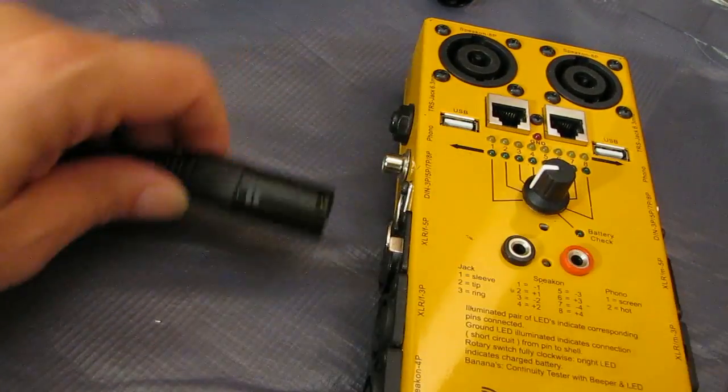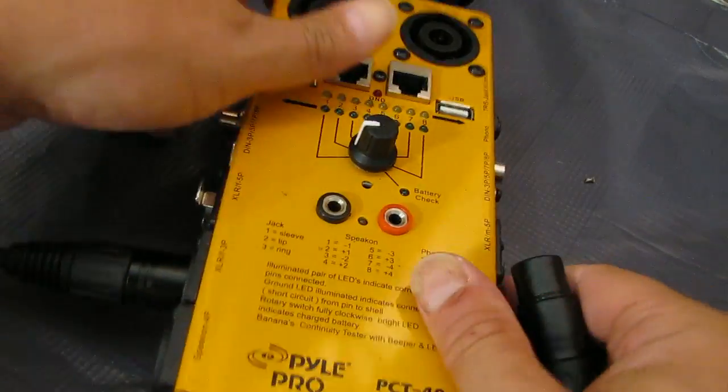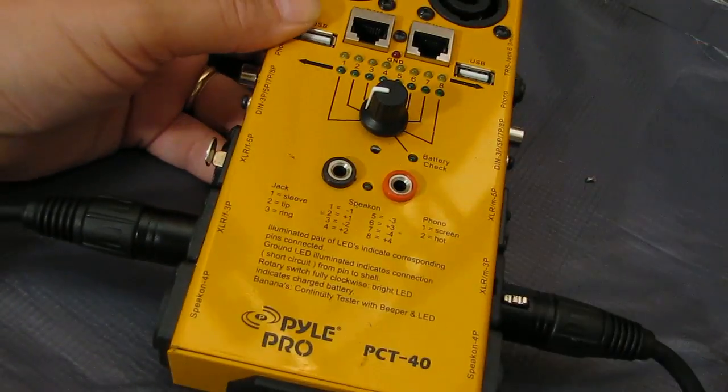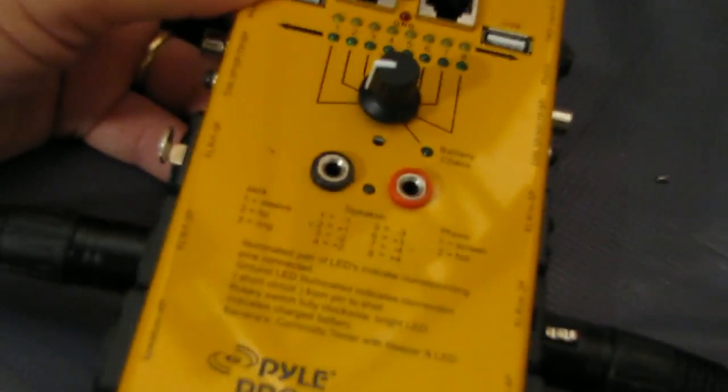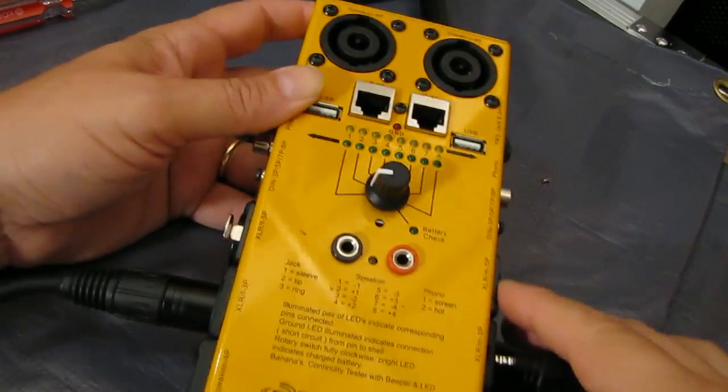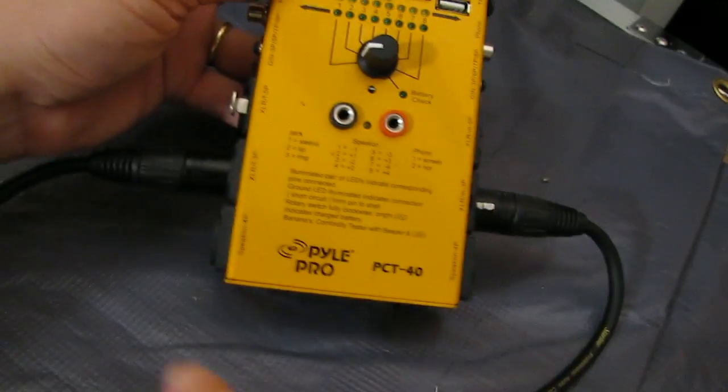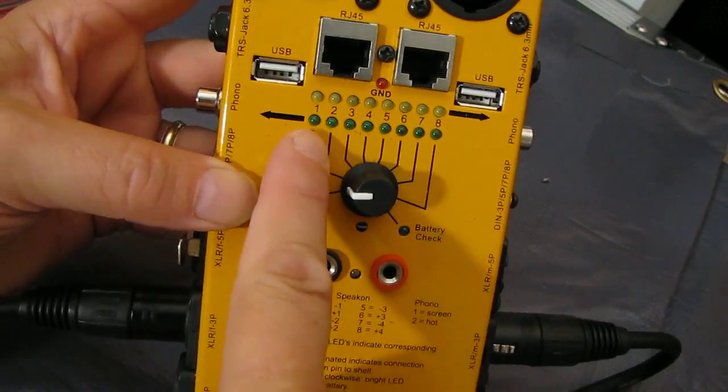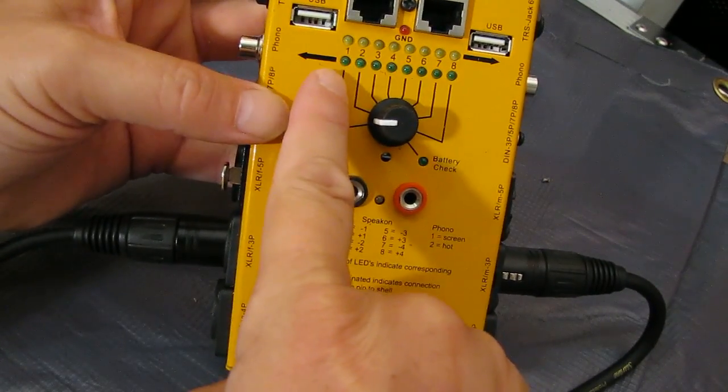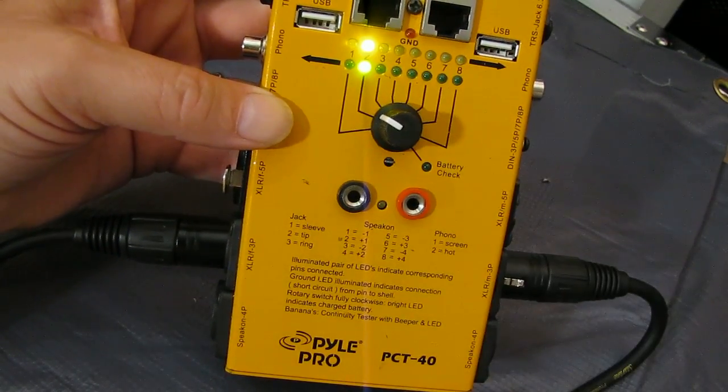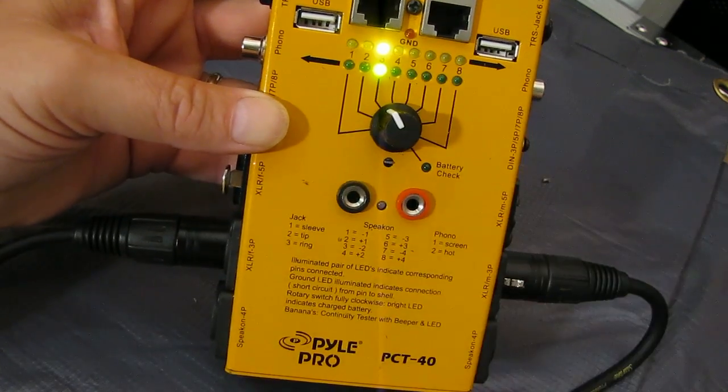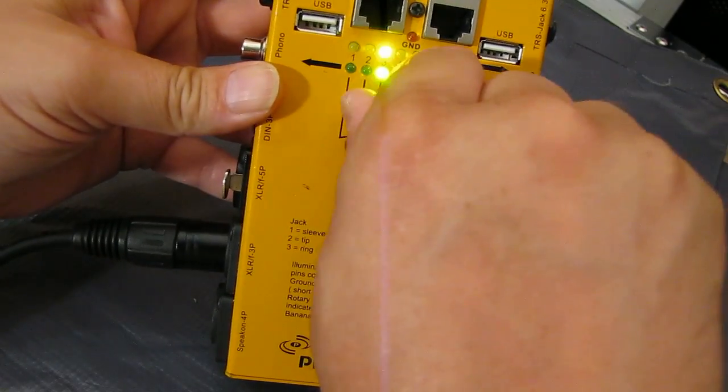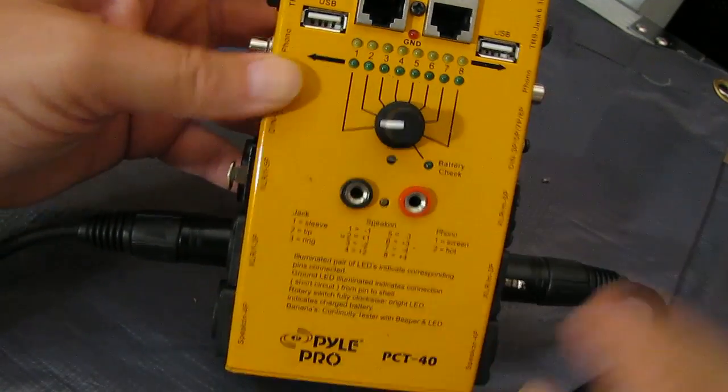So now what we're going to do, we're going to get our trusty tester here. We are connected. So technically we should be seeing something coming in on pin number one, but we don't, because we've disconnected it. To prove that it works, pin number two works, pin number three works, and obviously there's nothing else after three. So this cable has effectively a ground lift.